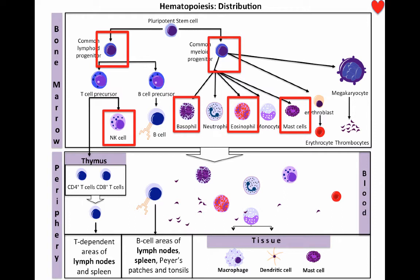In tissues, you will find phagocytic cells, such as macrophages and dendritic cells. However, you will also find mast cells.